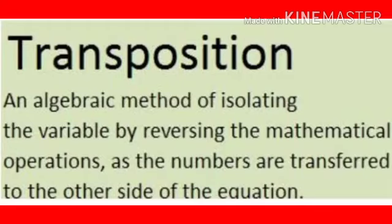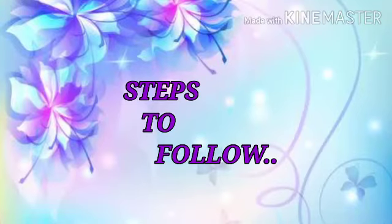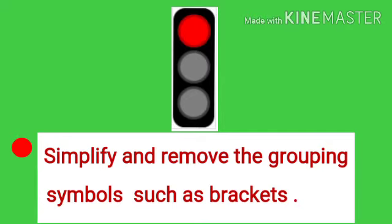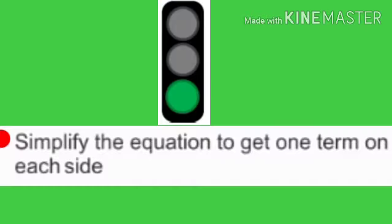We are using the transposition method to solve an equation. The transposition method is an algebraic method of isolating the variable by reversing the mathematical operations as numbers are transferred to the other side of the equation — plus changes to minus, minus changes to plus, multiplication changes to division, and division changes to multiplication. Steps to follow: Step 1, simplify and remove grouping symbols such as brackets. Step 2, transfer all variable terms to the left-hand side and all constants to the right-hand side — signs change when moved. Step 3, simplify the equation to get one term on each side.